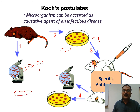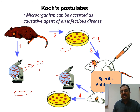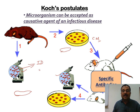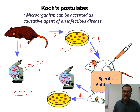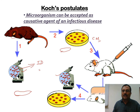A fifth postulate is that specific antibodies should be produced against the infectious agent. There are two organisms that do not follow Koch's Postulates: Mycobacterium leprae, which cannot be cultured artificially, and Neisseria gonorrhoeae, for which no suitable animal model is available. All other organisms follow Koch's Postulates.